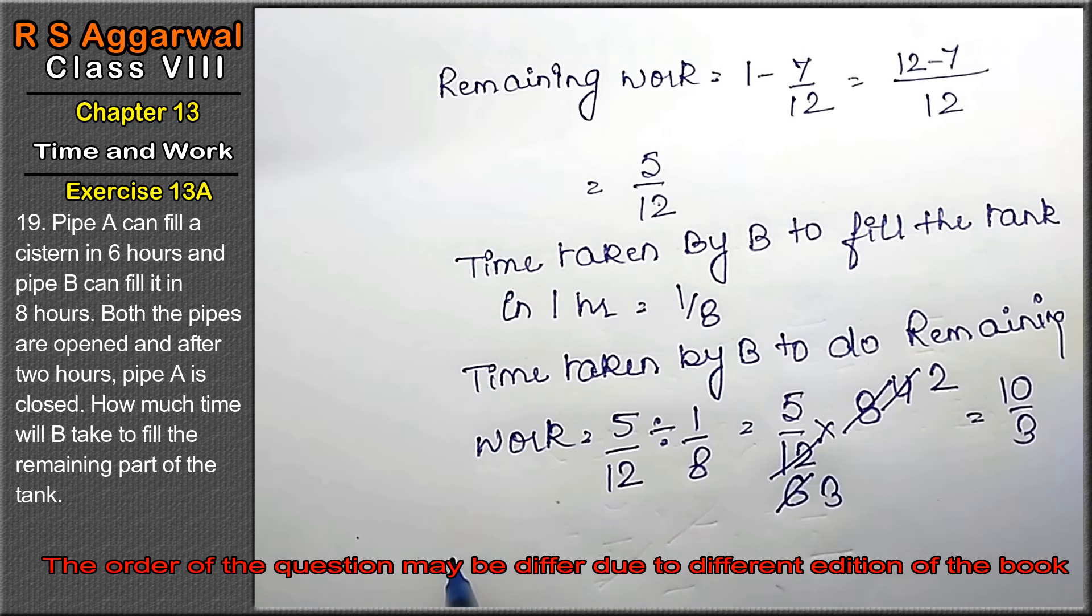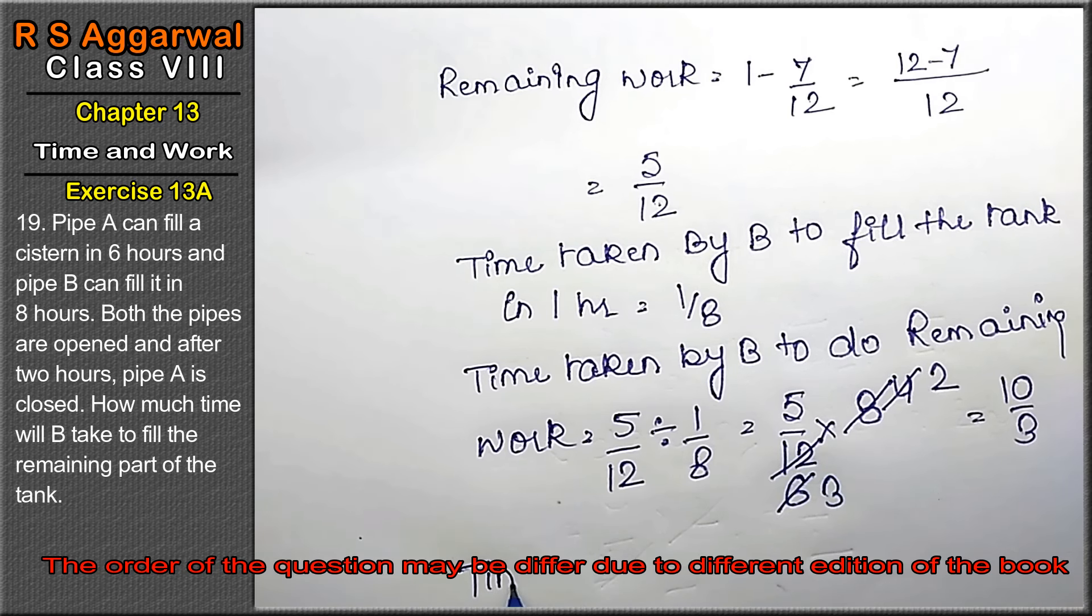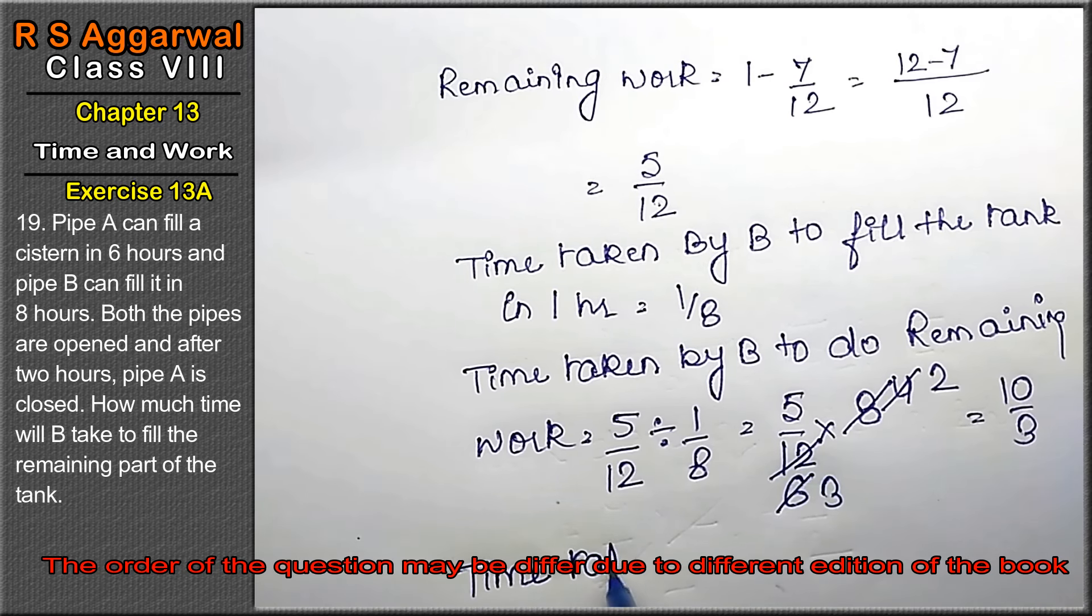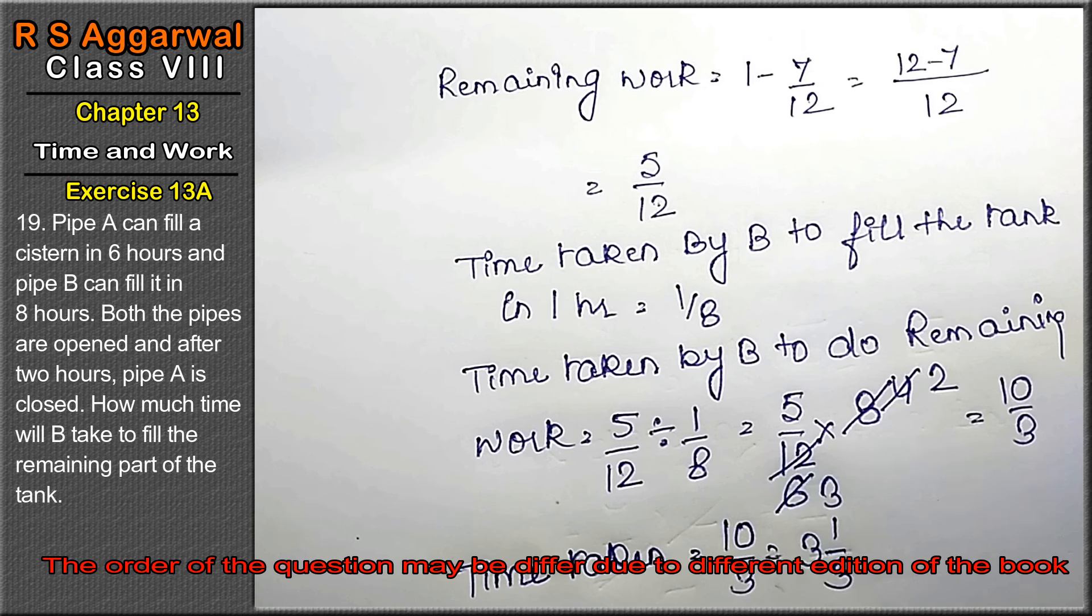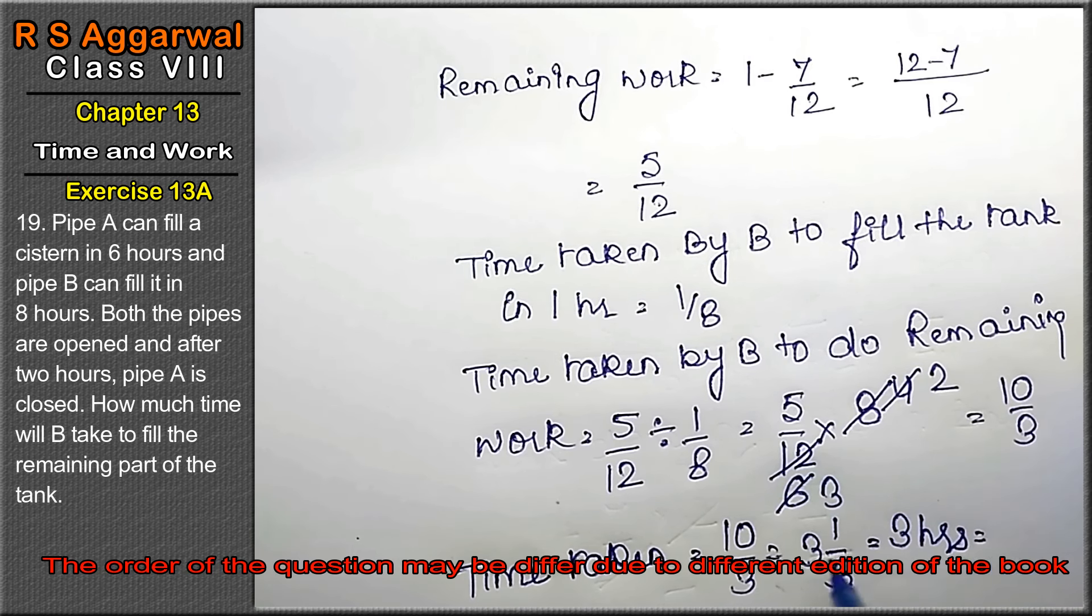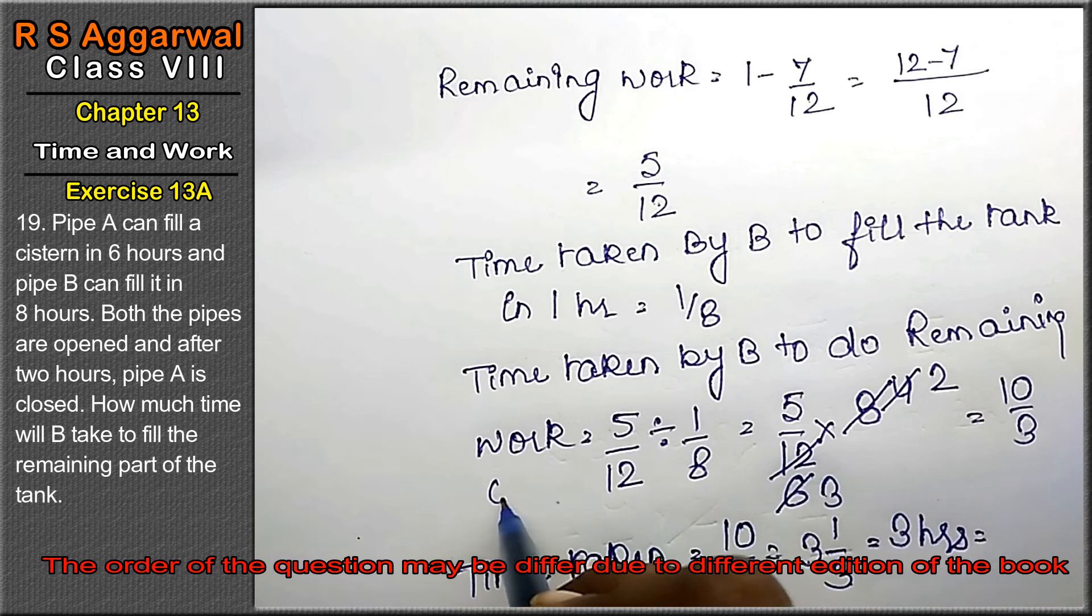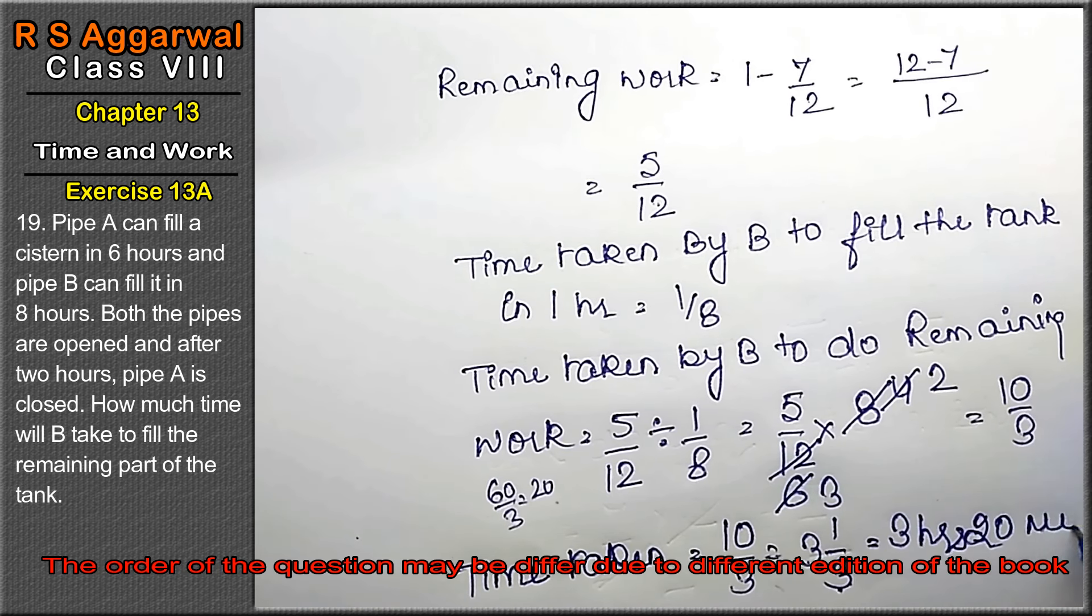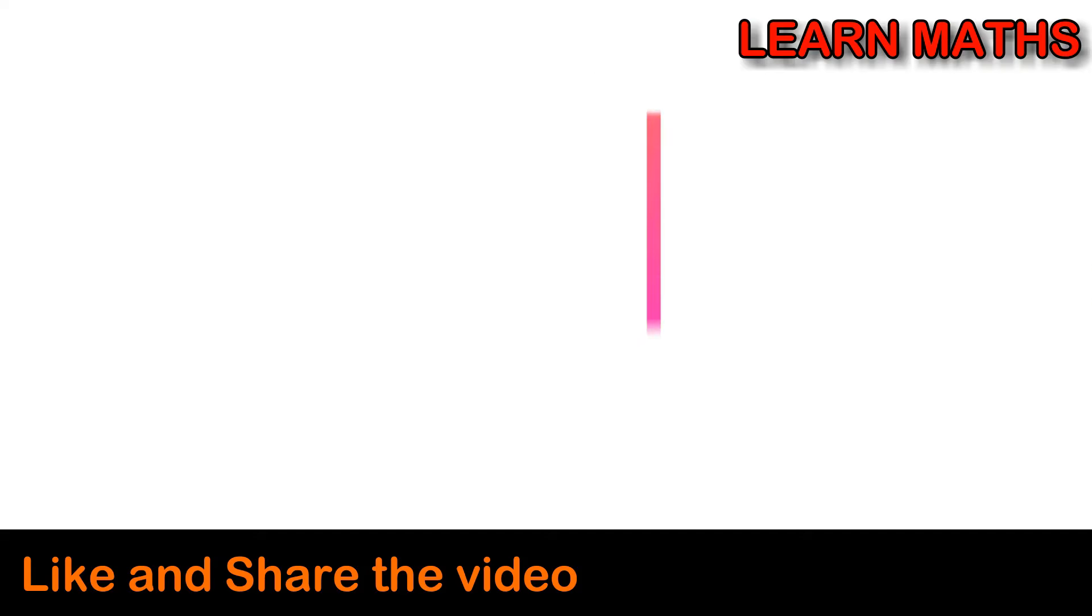Now time taken is 10 upon 3. And we can say 3 threes are 9, 3 ones are 3 and 0, 3 threes are 9 plus 1. 10 upon 3, that means 3 hours. How much time is in 1 hour? 60 minutes. 60 minutes divided into 3 parts, because denominator is 3, so that's 20 minutes. That means 3 hours 20 minutes is the answer. Thank you.